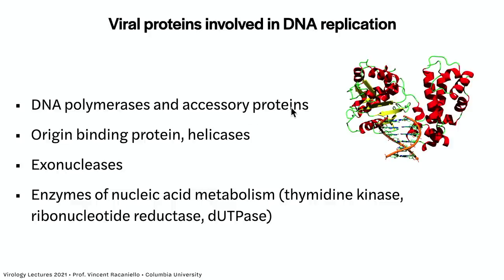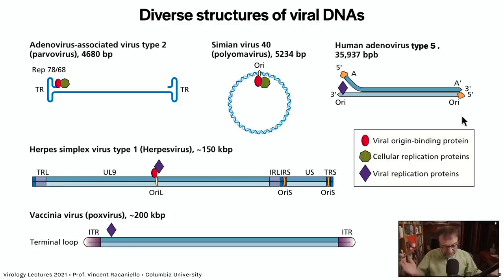In our eukaryotic cells there are a number of DNA polymerases with different functions, and other accessory proteins needed for replication. These include origin binding proteins — the origin is where DNA synthesis begins — helicases that unwind DNA, exonucleases to cut away the primer, and enzymes needed to make triphosphates. Small genomes don't encode these, but some larger viral genomes do, like thymidine kinase and ribonucleotide reductase encoded by herpesviruses.